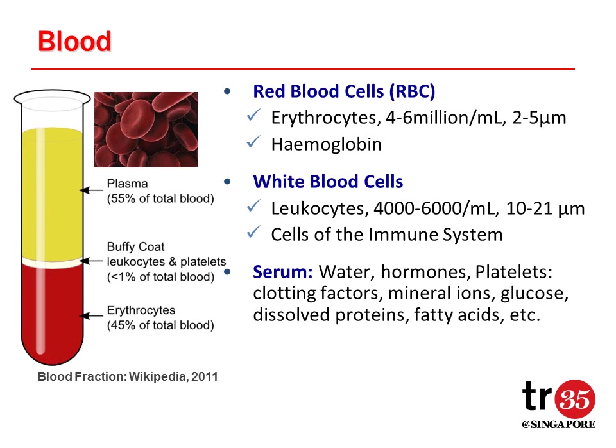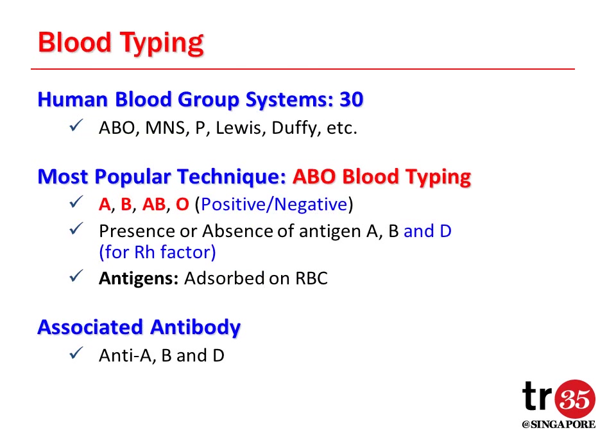Blood is essential for sustaining living tissue by supplying oxygen and other soluble nutrients. It has red blood cells, white blood cells, and blood serum. There are about 30 human blood group systems. The ABO blood typing is the most important and the most popular technique, which is determined from the presence or absence of antigen A, B, and D. Depending on the presence or absence of the antigens, we have blood groups like A, B, AB, or O. These antigens are adsorbed on red blood cells.